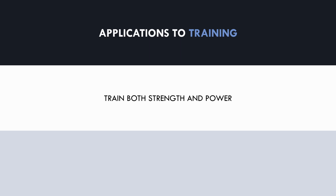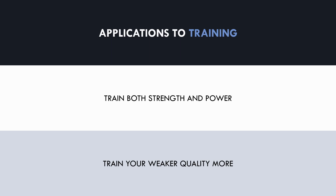Some athletes are naturally skewed to one direction or the other, meaning that some athletes are able to produce high forces but not very quickly, while other athletes may be able to produce force very quickly but are limited by their absolute force output. Theoretically, athletes may then benefit from training the qualities they are weaker at. So very strong athletes may benefit from more power training, while more powerful athletes may benefit from more strength training.